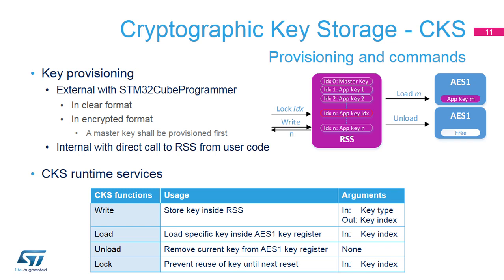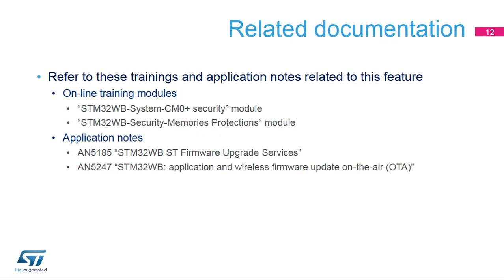All Root Security Services, including provisioning, are available at application runtime. Four services are available to the user application for key management: a Write service for storing additional keys; a Load service for AES-1 key register programming; an Unload service for cleaning the AES-1 key register after application completion; and a Lock service to prevent any reuse by another process of a given key until the next reset, which can be used in a user-secure boot application. In addition to this training, you may find the flash memory interface and system configuration trainings useful.